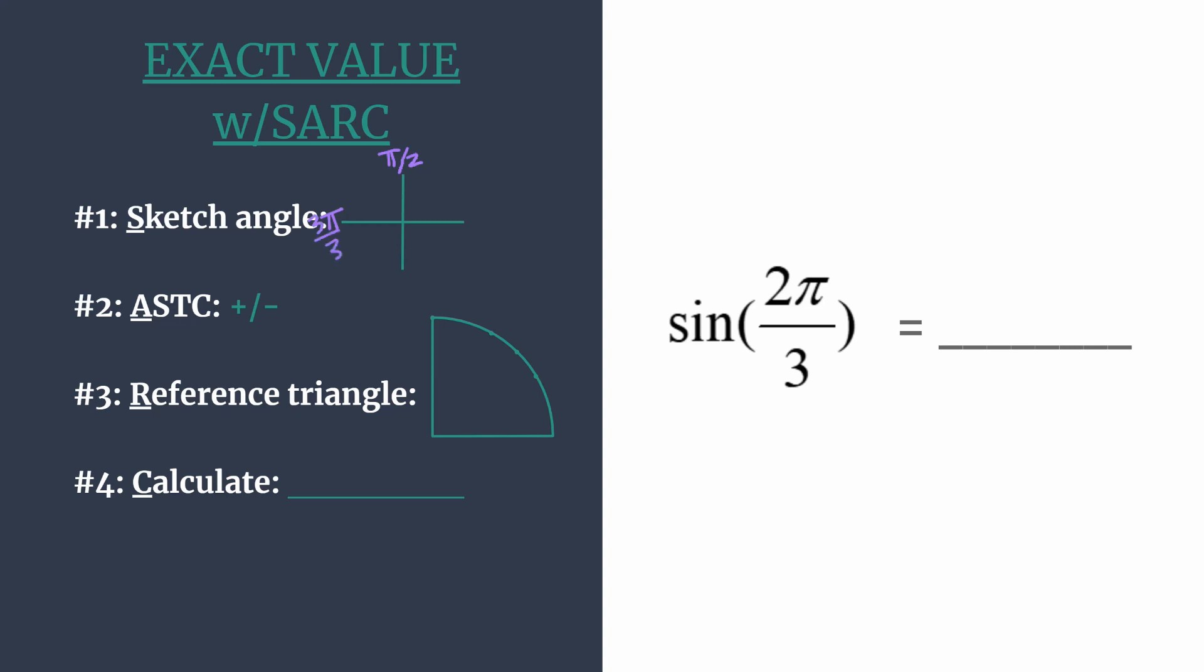And if it helps you to rewrite π as three-thirds π, you could do that. Okay, so our terminal side must fall about here. So we know that our angle's terminal side is in quadrant two.